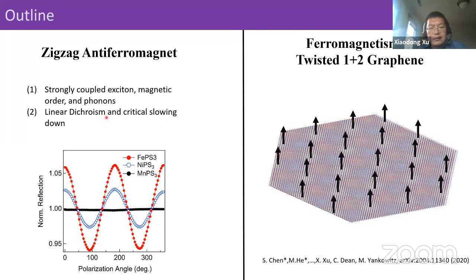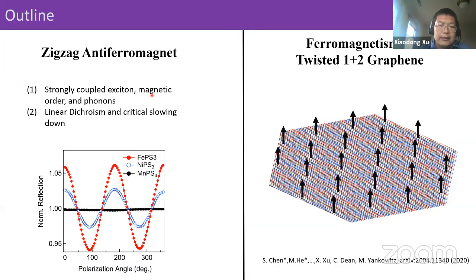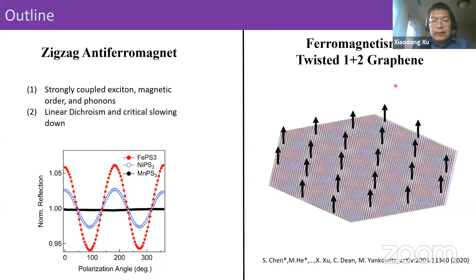Antiferromagnets are not easy to probe, especially at the nanoscale, because the tools we used for bulk crystals don't work there. In the second half of my talk, I'll talk about ferromagnetism in graphene — specifically the progress we made on ferromagnetism in twisted 1+2 graphene, a moiré pattern formed by a monolayer graphene on top of a Bernal-stacked bilayer graphene.